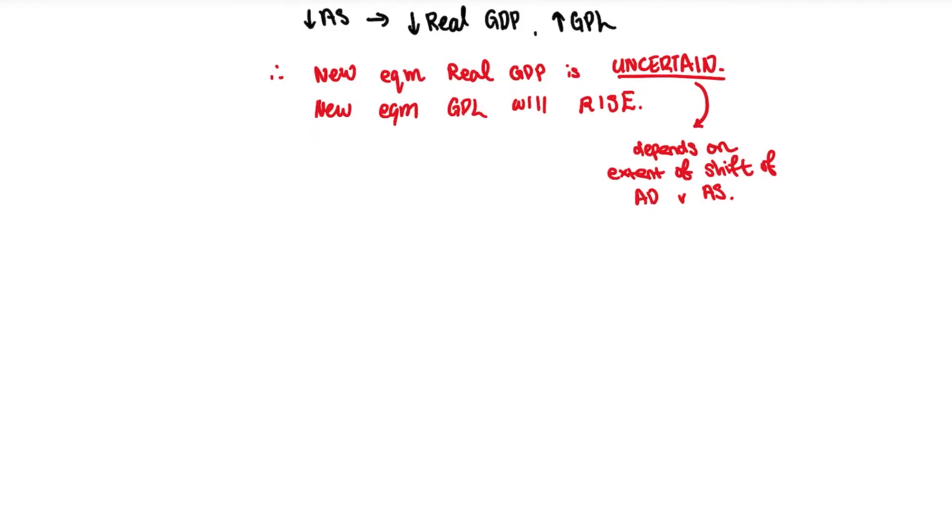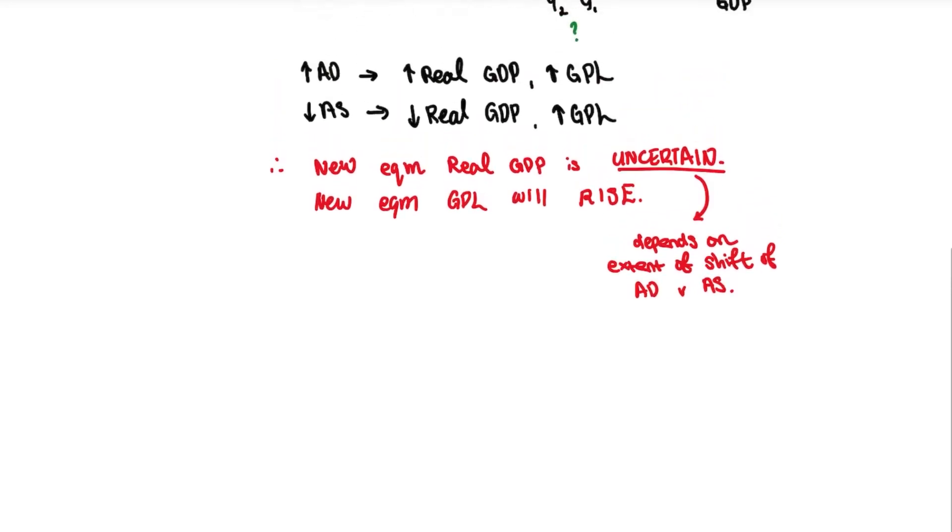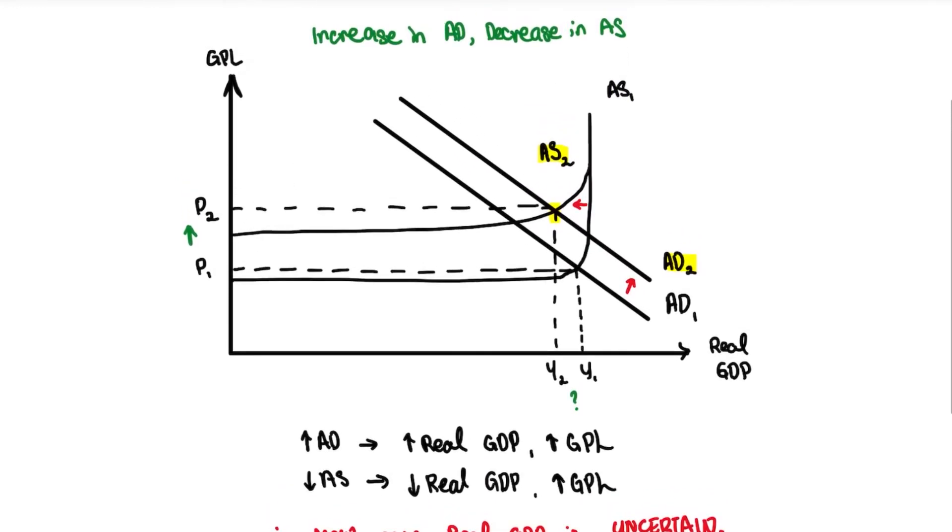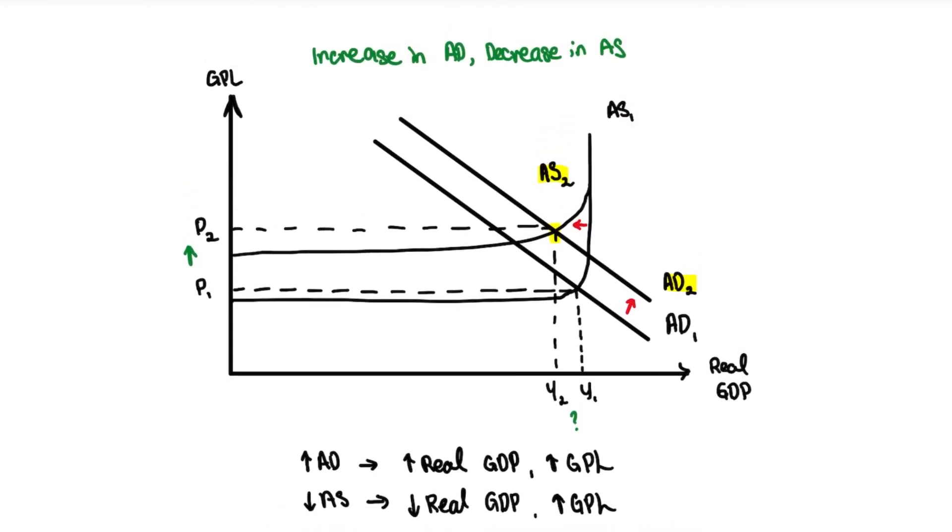So that will be how you actually do this question on your AD-AS. Quite a simple one on an increase in AD and a fall in AS. This will be the first of the macro series on how to draw macro diagrams. I'll be going through the rest of the simultaneous curves very soon, so stay tuned and leave a like on this video as well. See you guys then, bye.